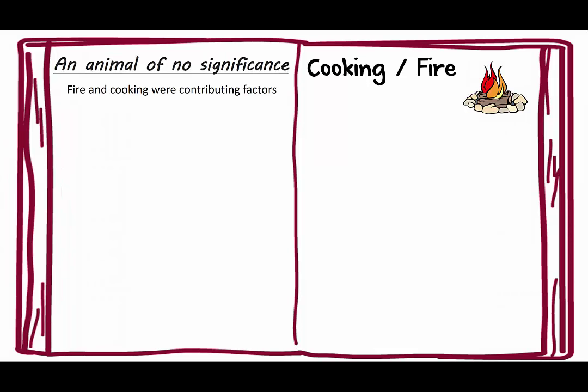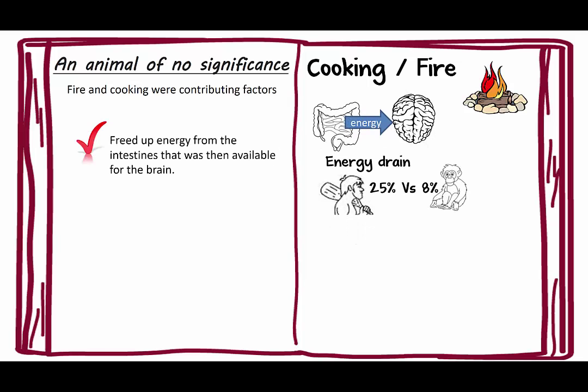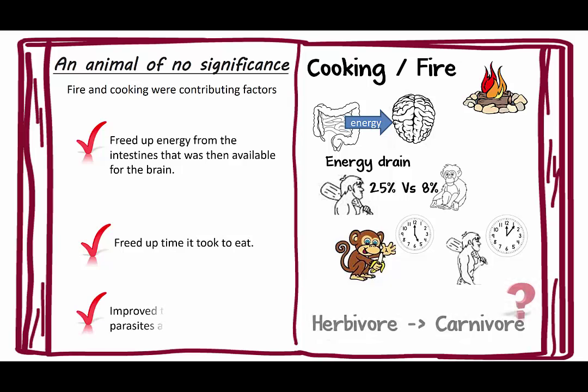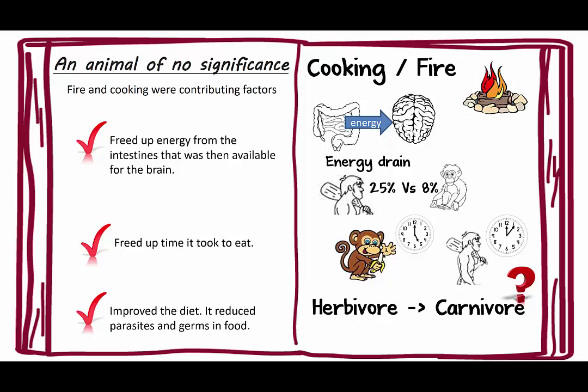Fire and cooking were contributing factors. By cooking, we freed up energy from the intestines that was unavailable for the brain — the two energy drains being the intestines and the brain. Cooking allowed us to use less energy in our intestines and therefore made more energy available for the brain. Sapiens use 25% of their energy in the brain, whereas for a chimpanzee it's only 8%. Cooking freed up time it took to eat — it takes a chimpanzee five hours, whereas it only takes us one hour to eat our meals. It also improved the diet and reduced parasites and germs in the food.